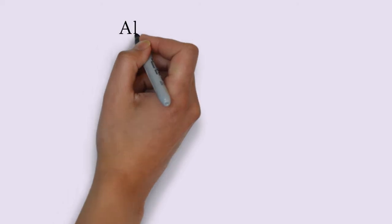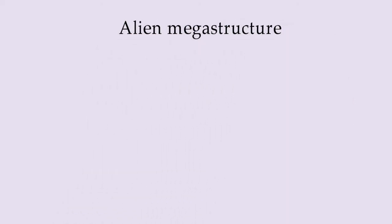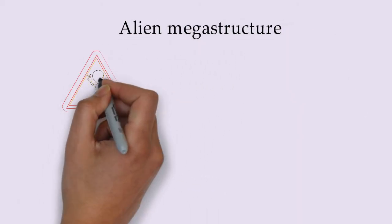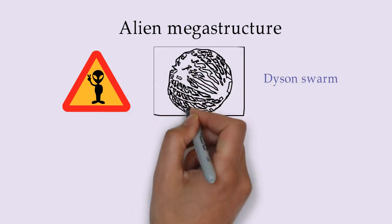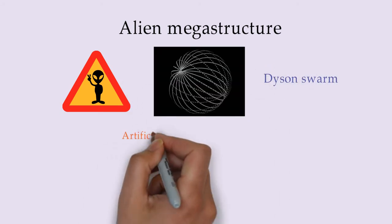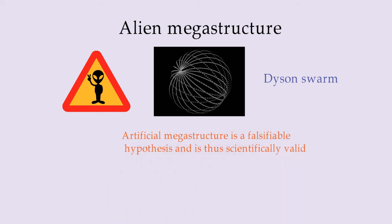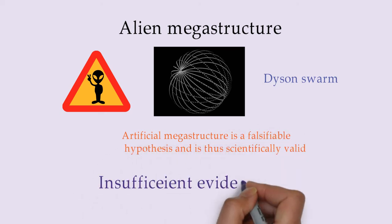The next hypothesis deals with the existence of an alien megastructure, such as the Dyson Swarm. The Dyson Swarm is a megastructure that advanced civilizations might be using to tap the energy of stars. And like all scientific theories, this theory is also scientifically valid because it is easily falsifiable. However, there is no sufficient evidence to prove the existence of such a structure.